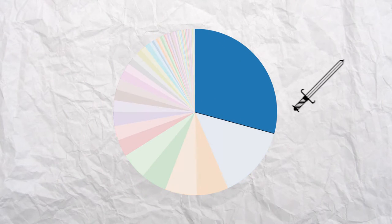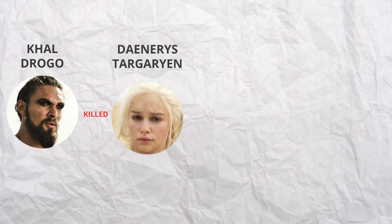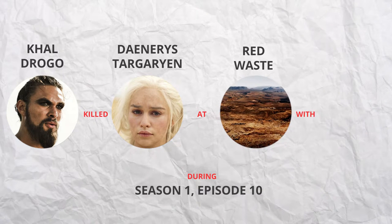Unsurprisingly, the sword is the most common method of killing people, with 30% of deaths being attributed to this weapon. But the most creative weapon that took down the mighty Dothraki chieftain...